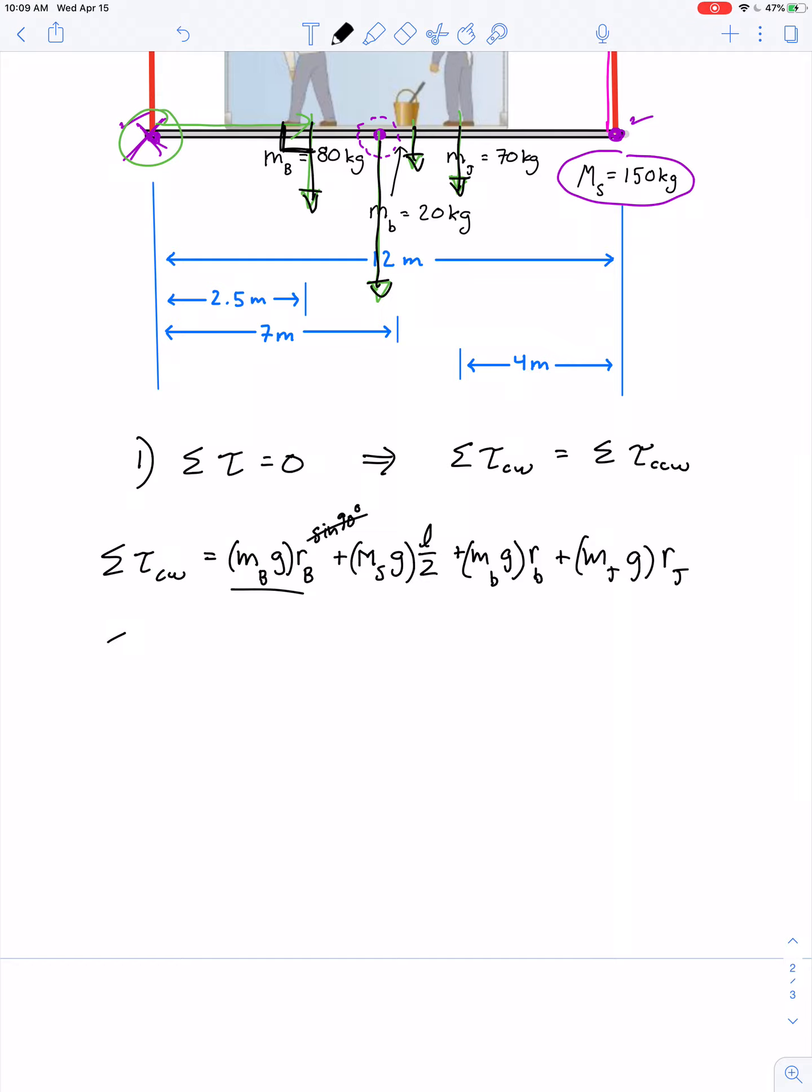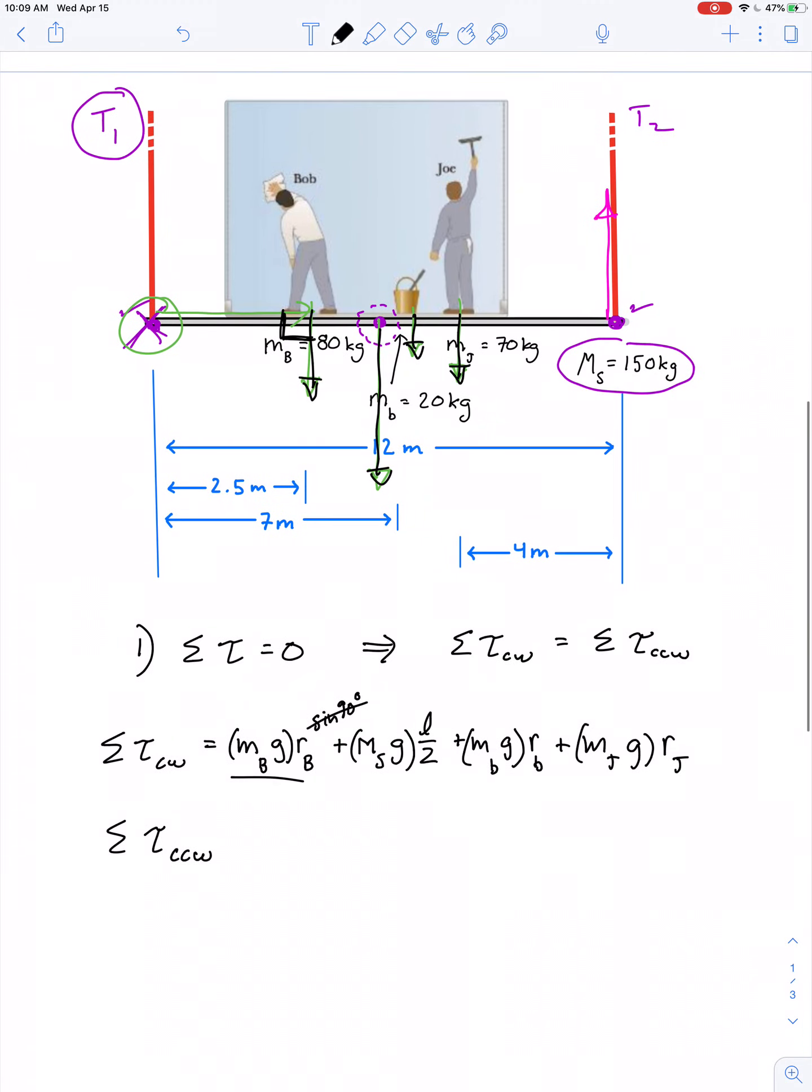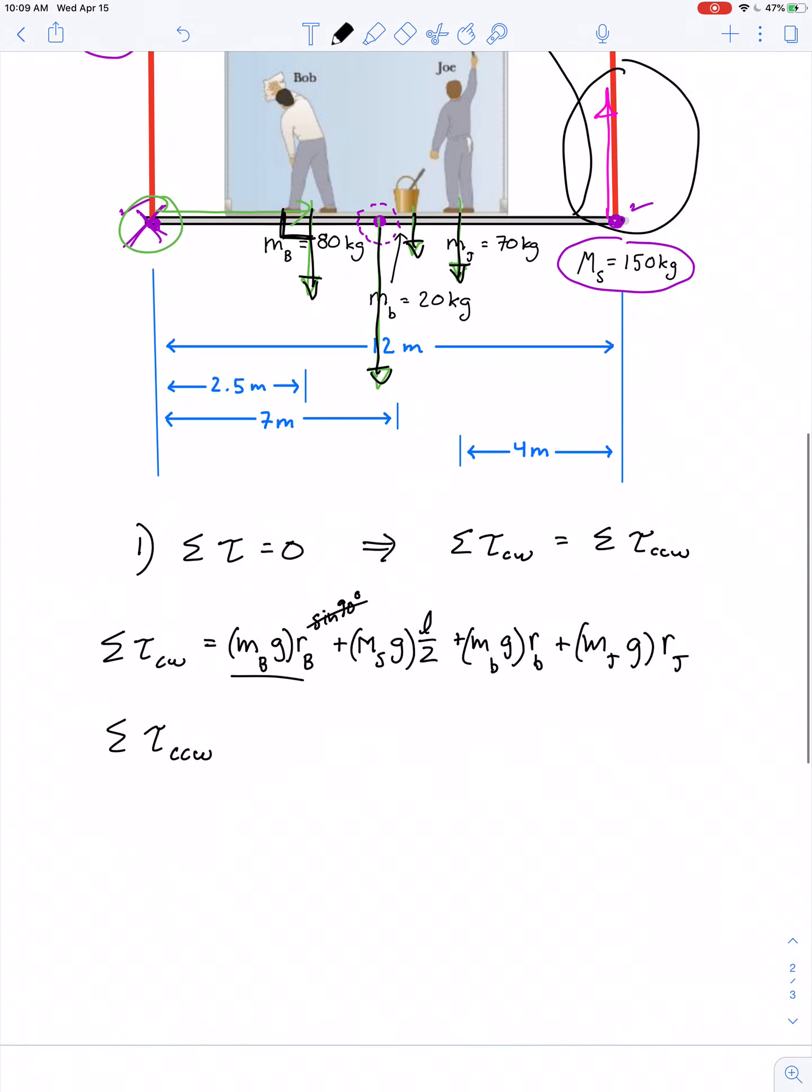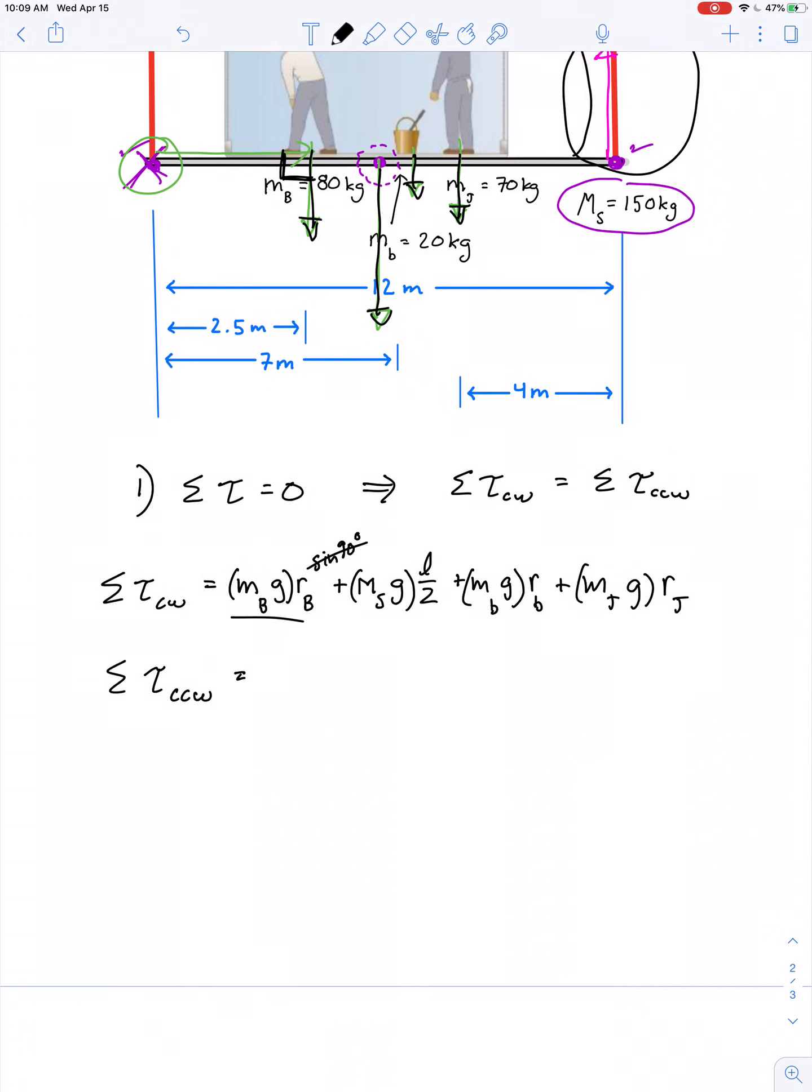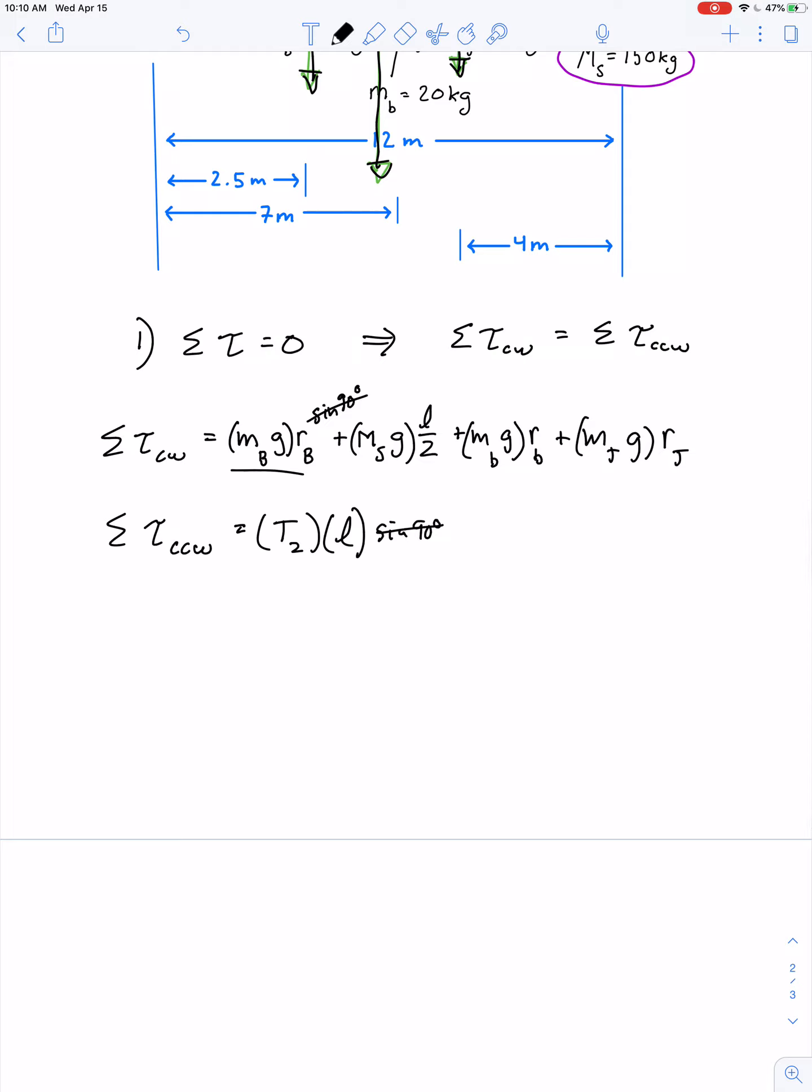What about the net counter-clockwise torque? There's only one more force: the upward force from the tension in cable number two, which would make this rotate counter-clockwise. That's force multiplied by lever arm, which is the entire length of the scaffold. If it's in equilibrium, the clockwise and counter-clockwise torques are equal.